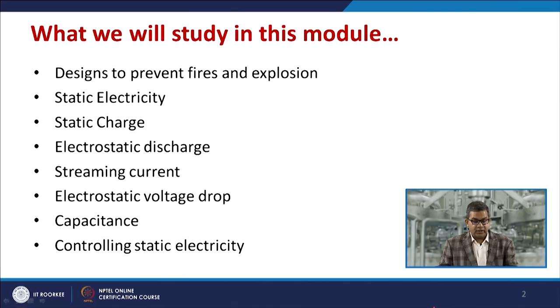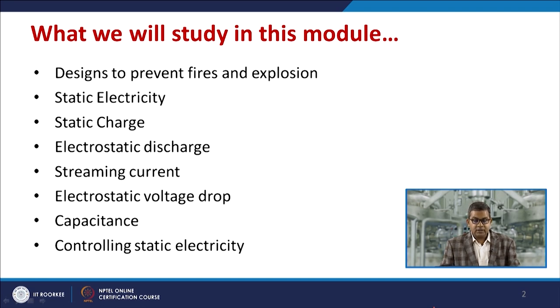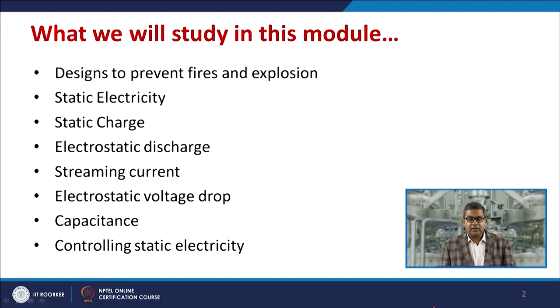Welcome to the next module of design to prevent fire and explosion. Up till now we have studied about the various purging methodologies through which we can inert any workplace where the chances of flammable vapours are on the higher side. In this module we will discuss about static electricity, static charge, electrostatic discharge, the impact of streaming current, electrostatic voltage drop, capacitance, and how to control static electricity.